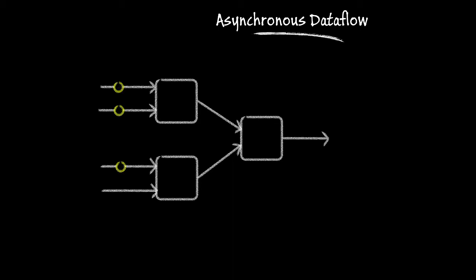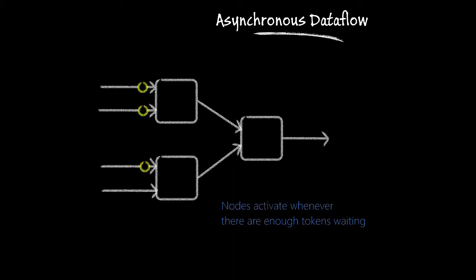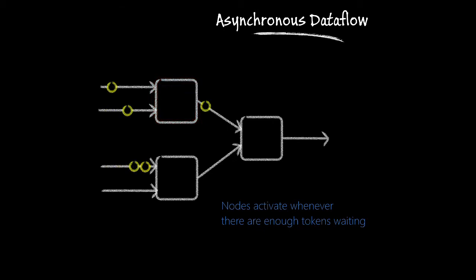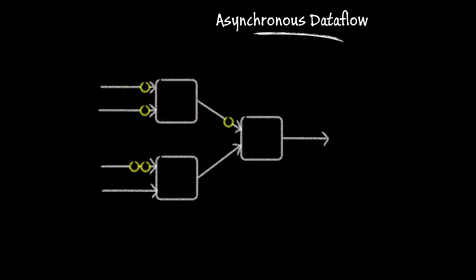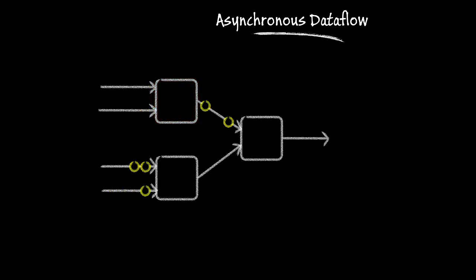Asynchronous activation in data flow is when nodes fire whenever there are enough tokens waiting at their inputs. In this example, nodes are only activated when tokens are available on all inputs, but this is not a requirement for asynchronous data flow.